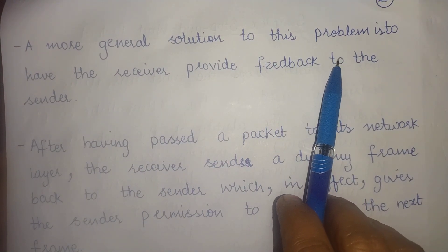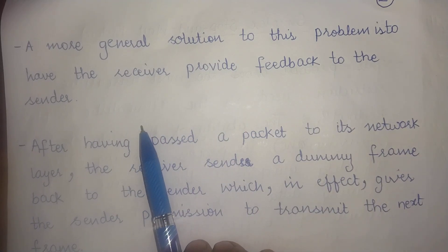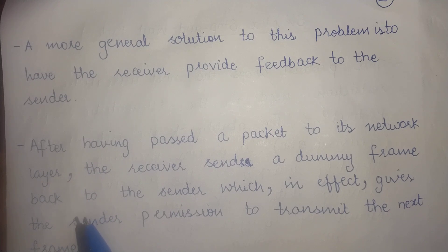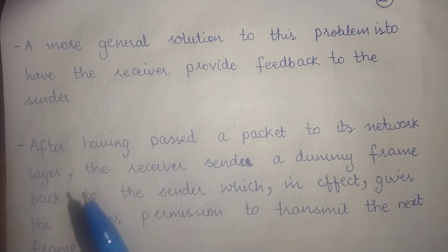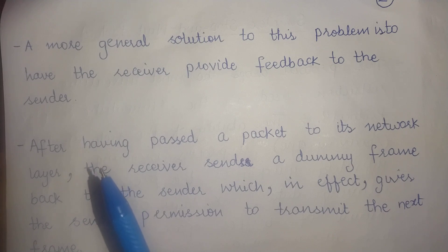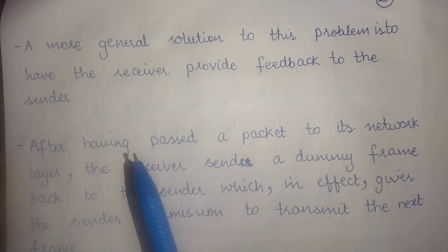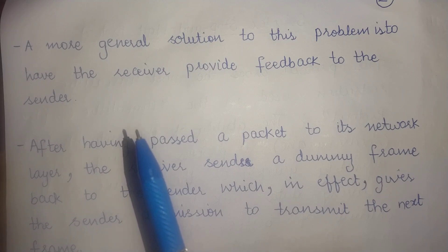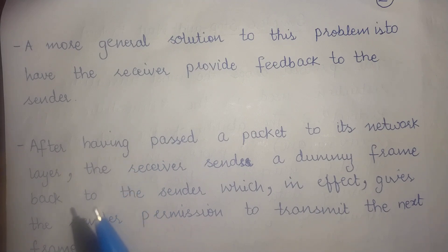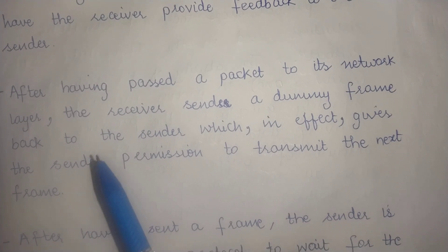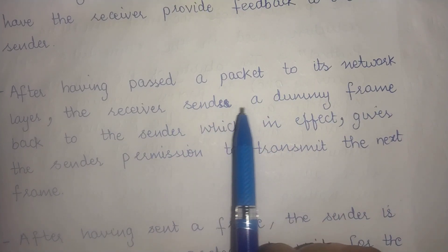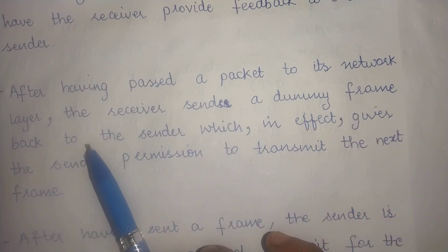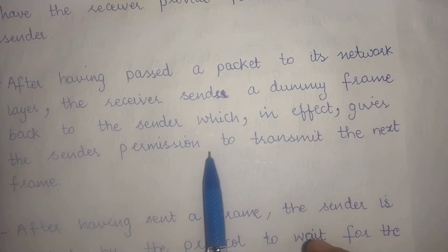A general solution is to have the receiver provide feedback to the sender, so the sender knows whether the previously transmitted packet has been received. Before sending a new data packet, the sender must know whether the previous one was received. This involves the receiver sending an acknowledgement to the sender, so the sender knows the previous packet was received successfully and the receiver is ready for the next frame. After passing a packet to its network layer, the receiver sends a dummy acknowledgement frame back, giving the sender permission to transmit the next frame.